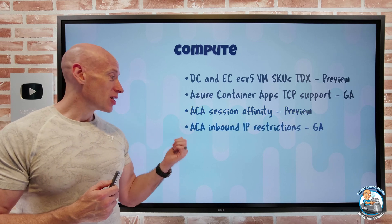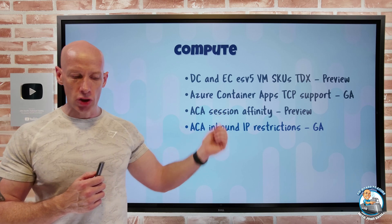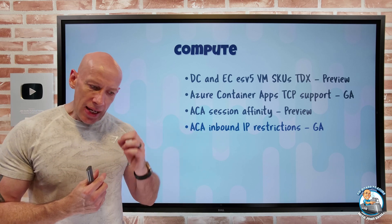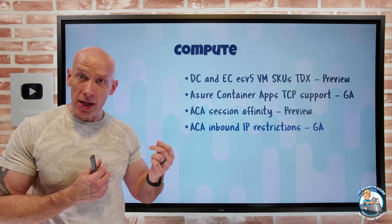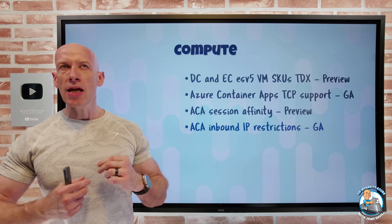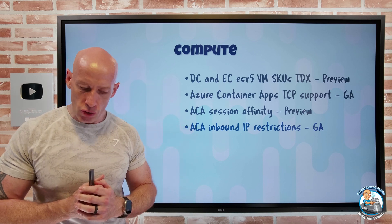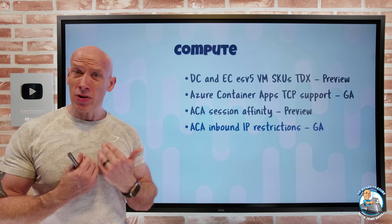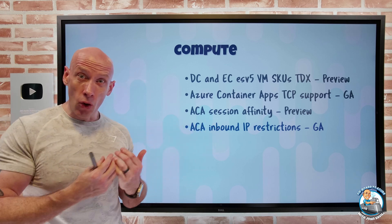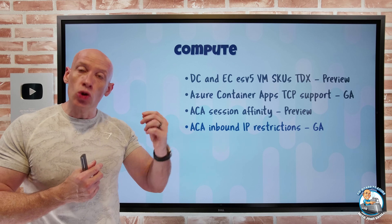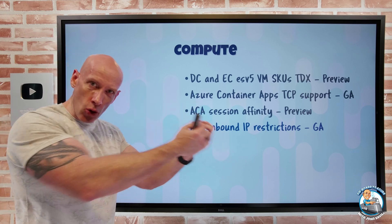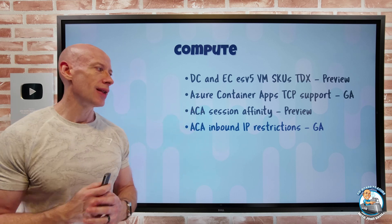Also for Azure Container Apps, inbound IP restrictions have gone GA. I don't have to think about some other solution in front of my Container Apps — it lets me restrict incoming HTTP or TCP traffic by allowing or denying particular CIDR ranges, i.e., groups of IP addresses. It's part of my ingress configuration. I set a default — allow all or deny all — and then add CIDR ranges as exceptions. If I denied all, the CIDRs I add would allow; if I allowed all, the CIDRs I add would deny.